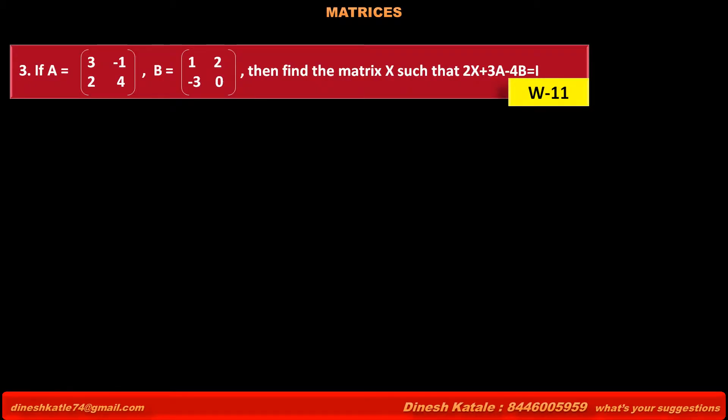Problem 3: If matrix A is equal to [3, -1; 2, 4] and matrix B is equal to [1, 5; -3, 0], then find the matrix X such that 2X + 3A - 4B = I (identity matrix).